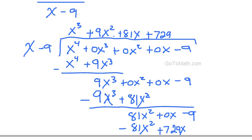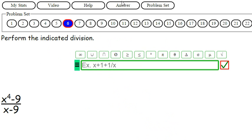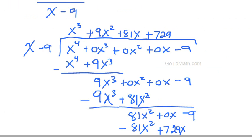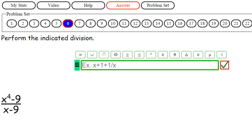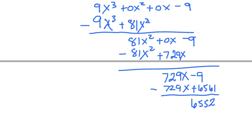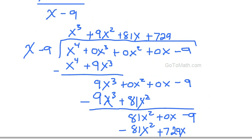Okay, so we should have x cubed plus 9x squared plus 81x plus 729. Let's just bring this up. Let's see what we got. And then 6552 over x minus 9.